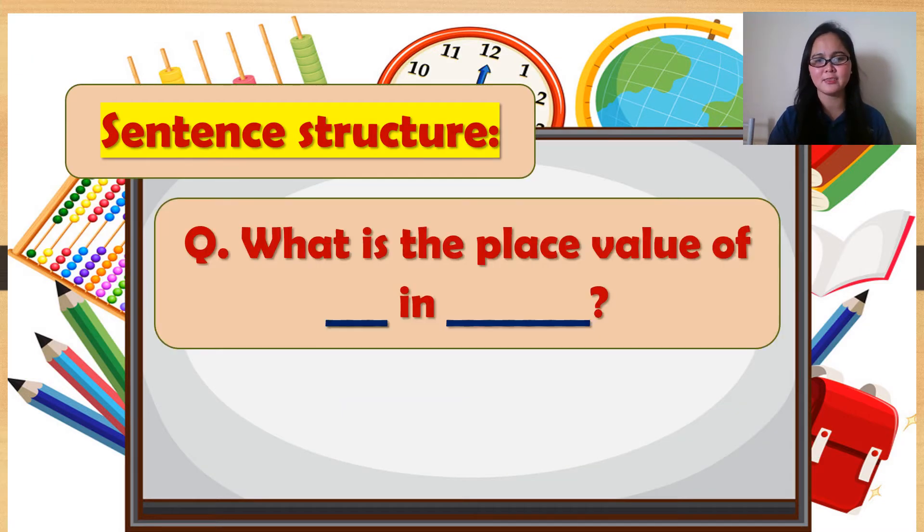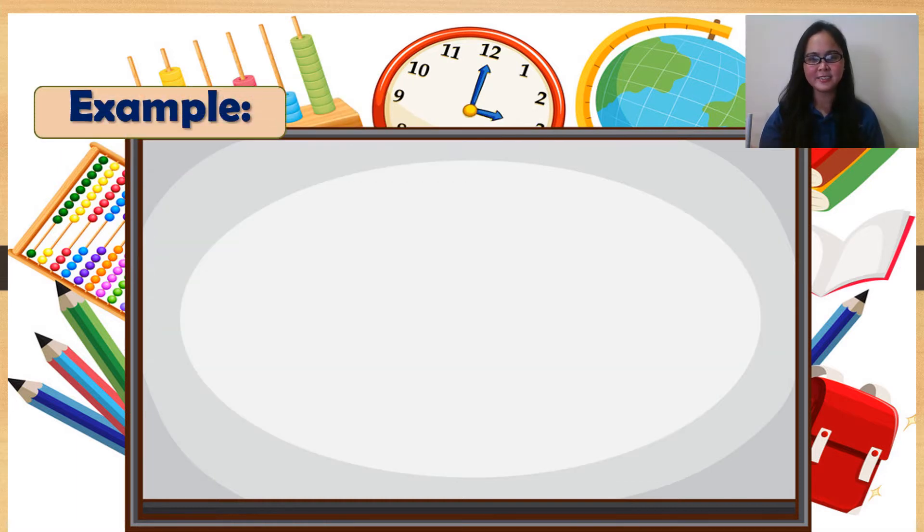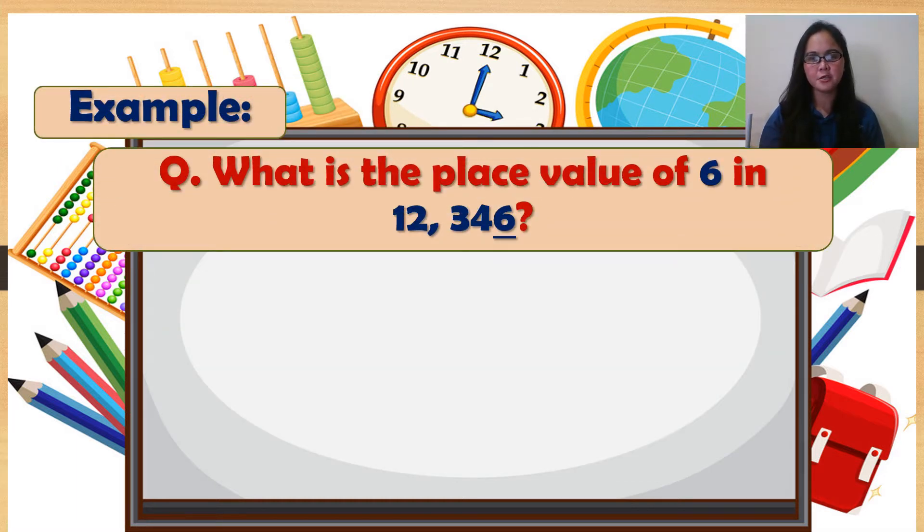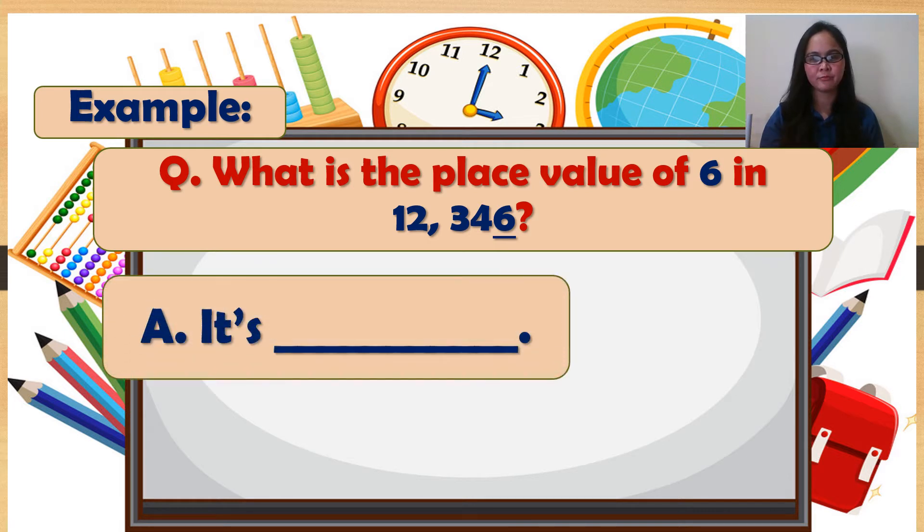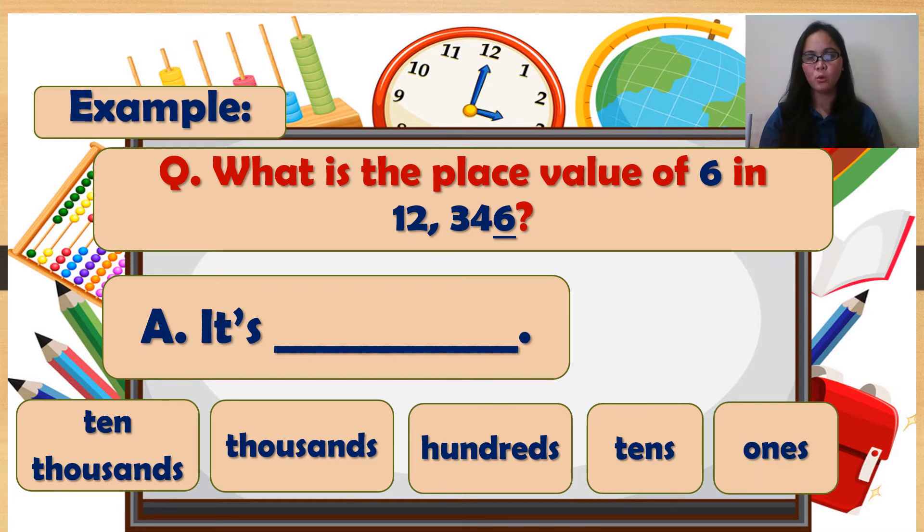For our sentence structure: what is the place value of blank in blank? It's blank. Example: what is the place value of 6 in 12,346? Is it ten thousands, thousands, hundreds, tens, ones? It's ones. Good.